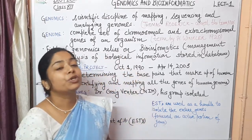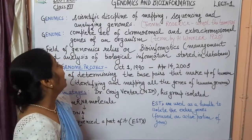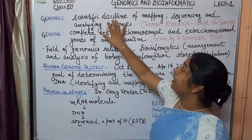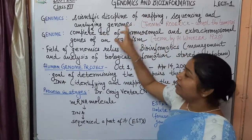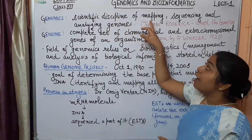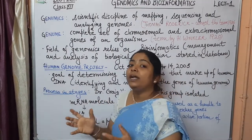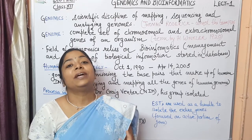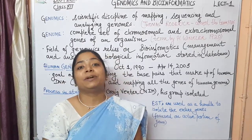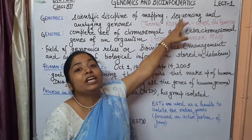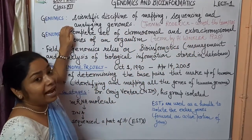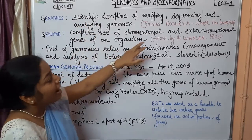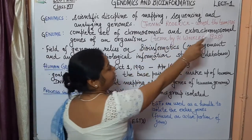Before moving on, we should know about the basic terms, and the first word is genomics. What is genomics? It is a scientific discipline of mapping, sequencing, and analyzing genomes. Mapping means making a map of gene sequences and nucleotide arrangement — the complete arrangement. For this we need to do sequencing of the gene and analyze the genome. This term was given by Thomas Roderick in 1986.